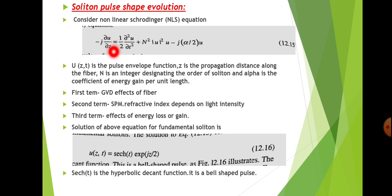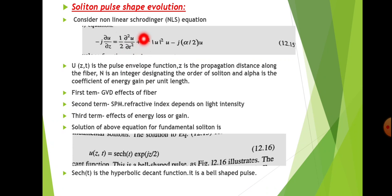In the NLS equation, n is the integer designating the order of the soliton and α is the coefficient of energy gain per unit length. The first term represents the GVD effect of the fiber, the second term represents the SPM effect — the refractive index of the fiber depending on light intensity — and the third term represents the effect of energy loss or gain, due to fiber attenuation or optical amplification respectively.